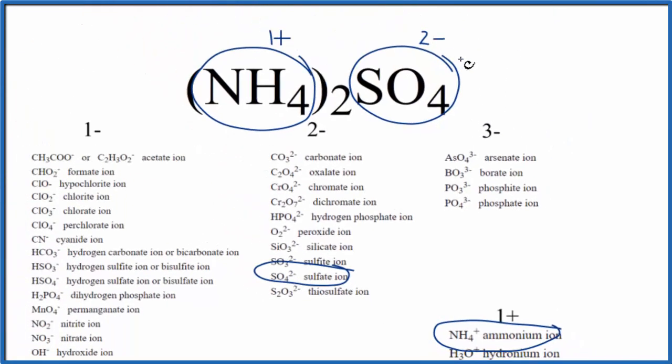So you can see that because this has a 2- ionic charge, we need two of these 1-plus ammonium ions for it to balance out, give us a net charge of zero.